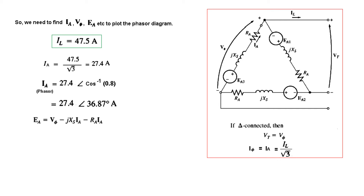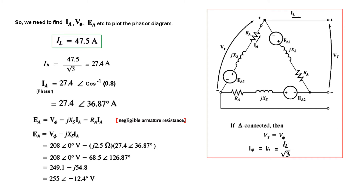Now we calculate Ea. With negligible armature resistance, Ea = V_phase − Xs*Ia. We know V_phase, Xs = 2.5 Ω, and the calculated current phasor. Solving this gives Ea = 255 at angle −12.4 degrees.